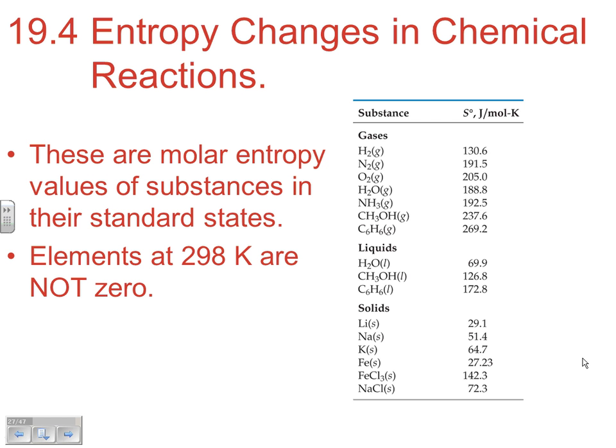For our solids, the third law of thermodynamics states the entropy of any solid substance in its crystalline form at 0 kelvin would be 0 for an entropy value. If you're above 0 kelvin, you should have a positive value for your entropy, and that's what you see for all these substances here.